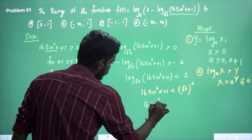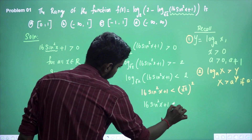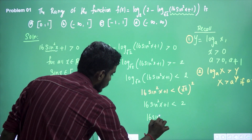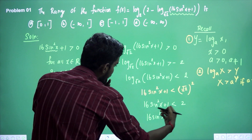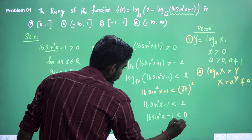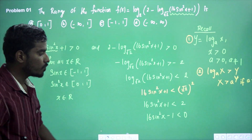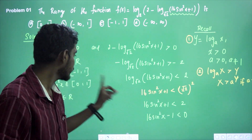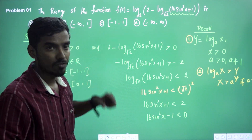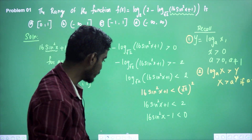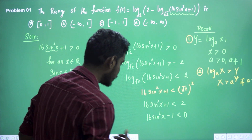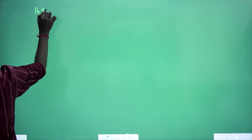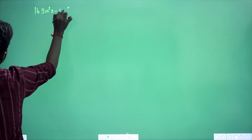So we need 16sin²x + 1 < 2, which gives 16sin²x < 1, and therefore 16sin²x − 1 < 0.